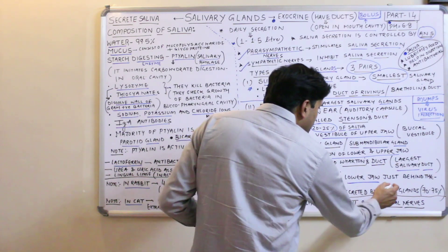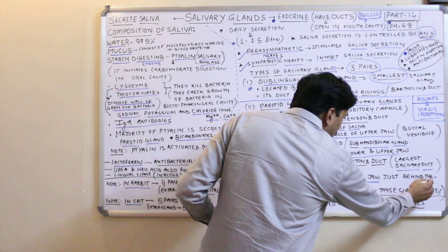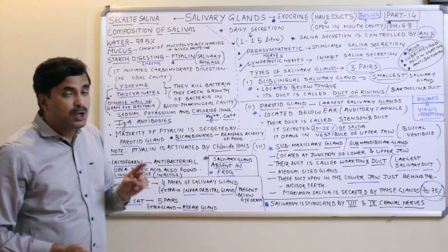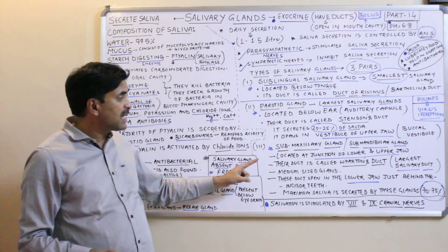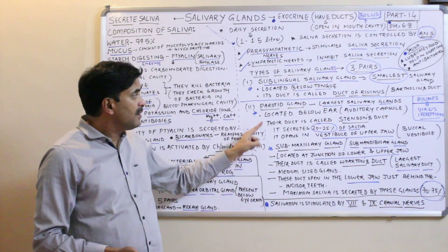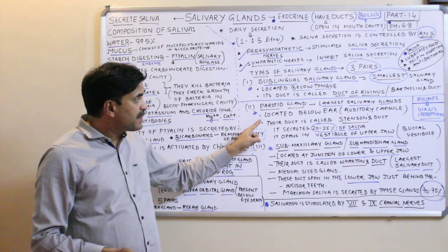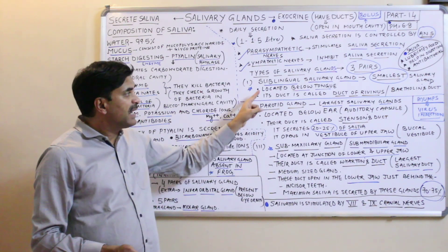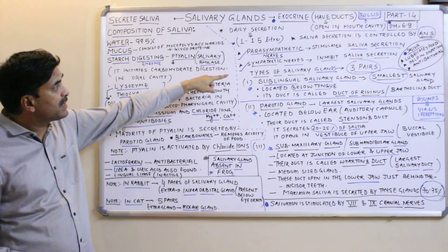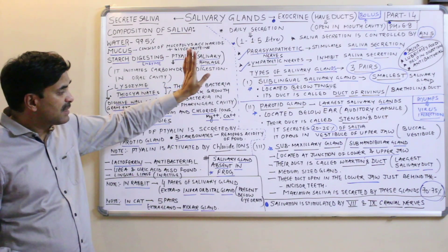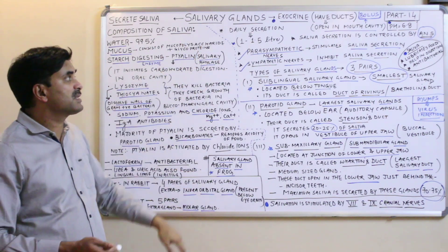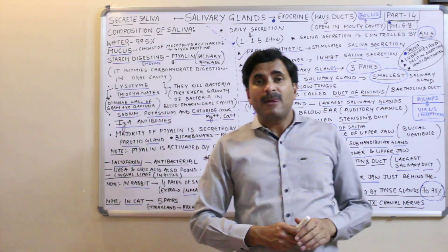The submaxillary gland secretes the maximum saliva — 70 to 75 percent. If asked what percentage is secreted by the submaxillary gland, the answer is 75%. The parotid gland secretes 25%, and a very small amount is secreted by the sublingual salivary gland. These are the three pairs of salivary glands found in humans.